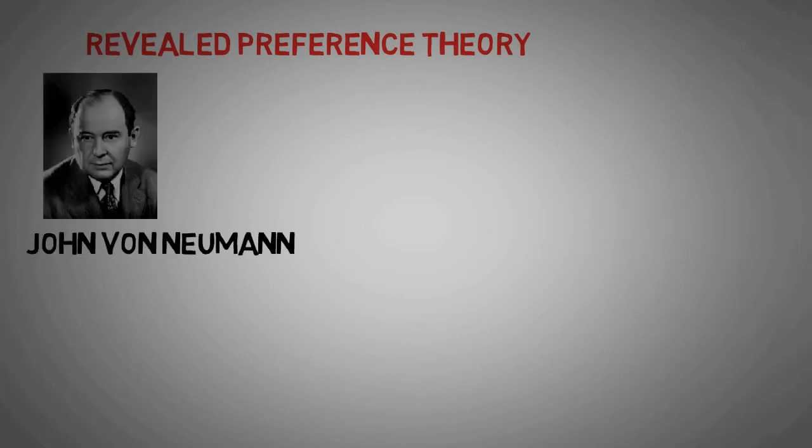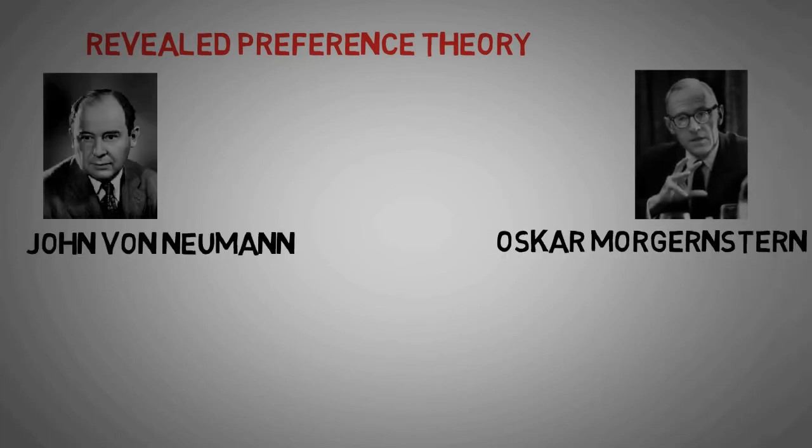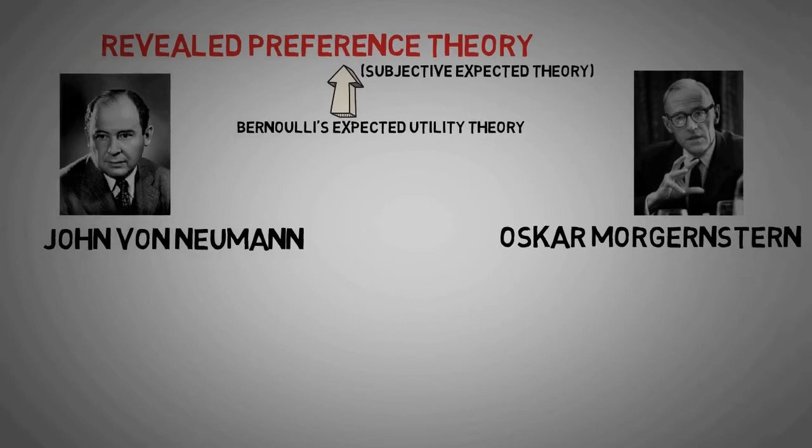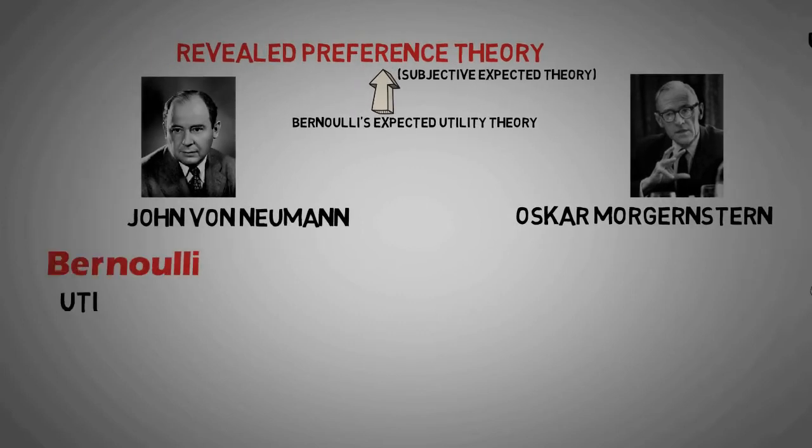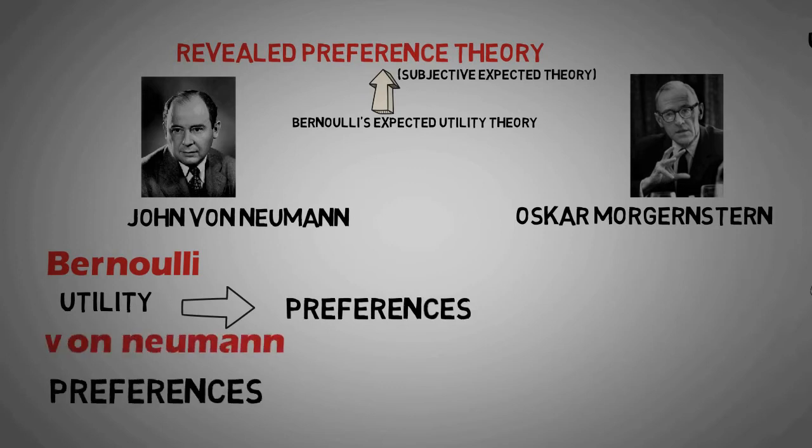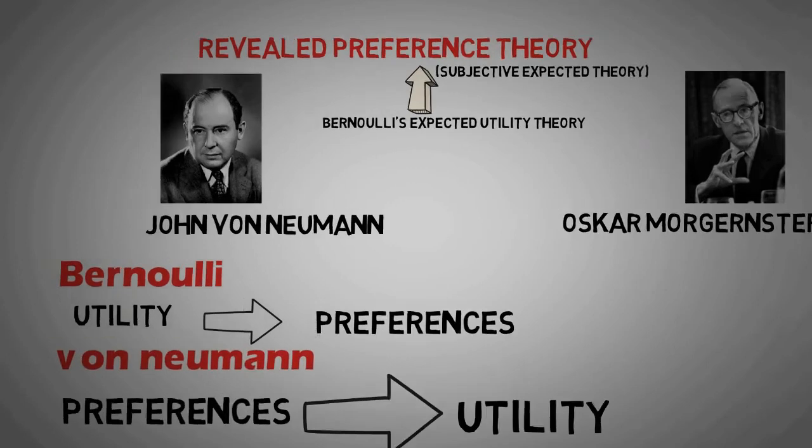Revealed Preference Theory - after two centuries, von Neumann and Morgenstern revolutionized Bernoulli's expected utility theory by giving Revealed Preferences theory or Subjective Expected theory. Bernoulli used utility to define preferences while von Neumann used preferences in defining utility.